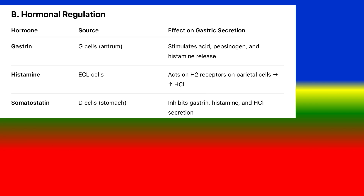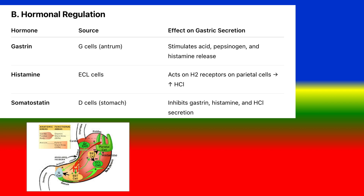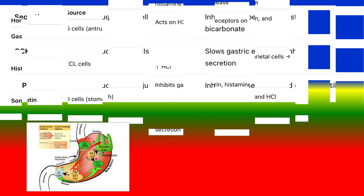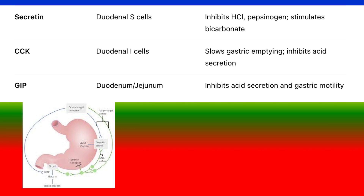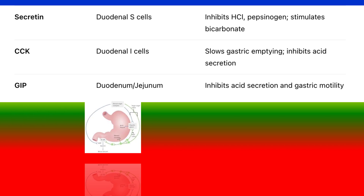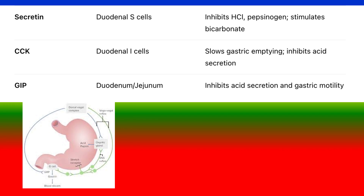B. Hormonal regulation: Gastrin, from G cells in the antrum, stimulates acid and pepsinogen secretion. Histamine, from ECL cells, acts on H2 receptors on parietal cells to stimulate HCL. Somatostatin, from D cells in the stomach, inhibits gastrin, histamine, and HCL secretion. Secretin, from duodenal S cells, inhibits HCL and stimulates bicarbonate secretion. Cholecystokinin (CCK), from duodenal I cells, slows gastric emptying and inhibits acid secretion. Gastric inhibitory peptide (GIP), from the duodenum, inhibits acid secretion and gastric motility.